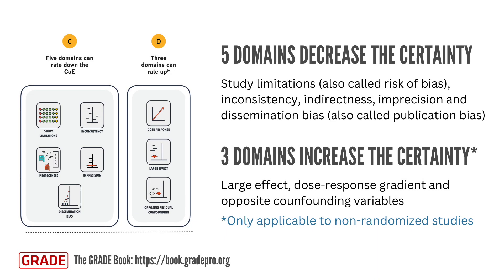In addition to the five domains that allow rating down the certainty of evidence, three other domains enable increasing the certainty by one or two levels when evaluating non-randomized studies. These domains involve situations such as observing a large effect of the intervention, identifying a dose-response gradient, or recognizing plausible residual confounding that would likely reduce an observed effect. In each scenario, a special characteristic of the data strengthens the inference of causality, therefore increasing the confidence in a non-trivial effect of the intervention.